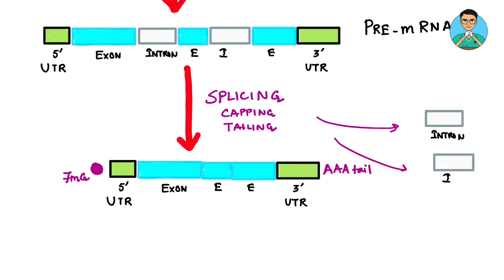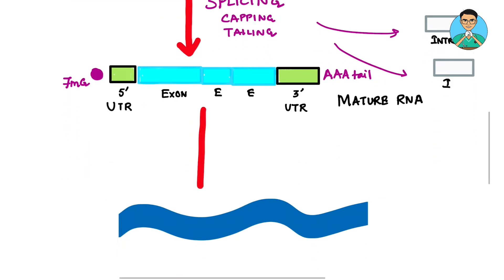Now this capped, spliced and tailed RNA is known as a mature RNA. Now this mature RNA ultimately undergoes a procedure known as translation and forms finally what we know as the polypeptide.